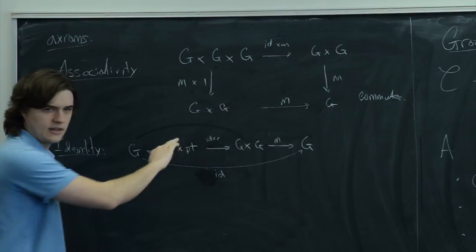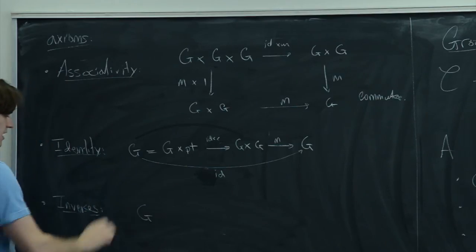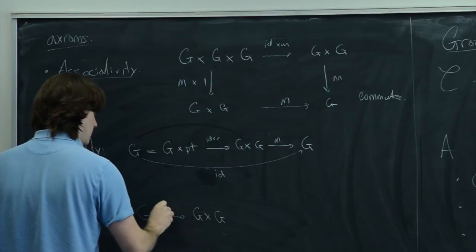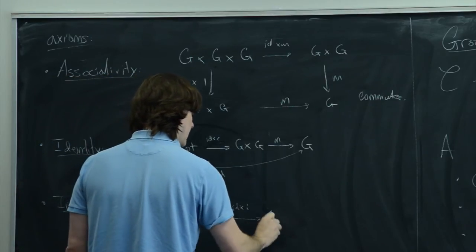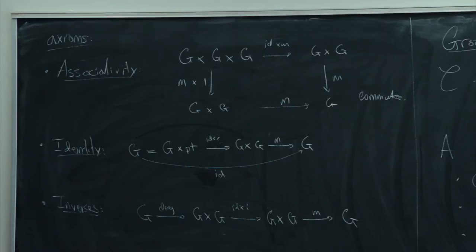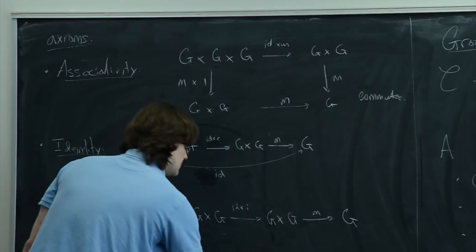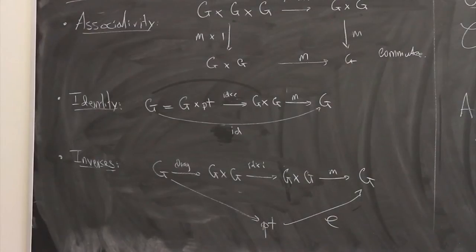You also want the same thing if you switch the order. Then there's the axiom for inverses: if you start with G, map by the diagonal to (X, X), then by identity and inversion to (X, X-inverse), and then multiply, this should be the identity, meaning there's a universal map from G to the point making the diagram commute. This says I is a right inverse; you should also have the axiom where I is a left inverse. This is the entire definition — a group object has this data and these axioms.